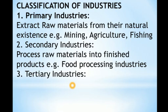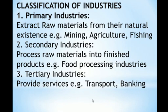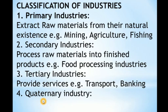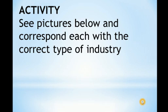Number three is tertiary industries, which provide services such as transport and banking. Number four is quaternary industries, which also provide services, but this time in the form of information. Examples include consultancy firms, ICT firms, and research companies — these are quaternary industries where the service is essentially information.